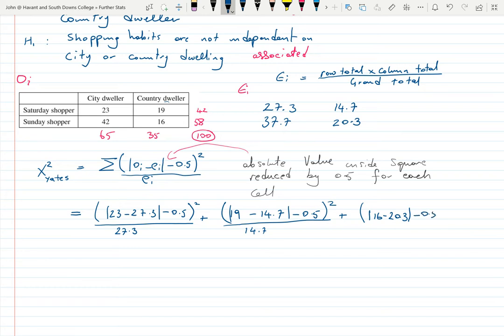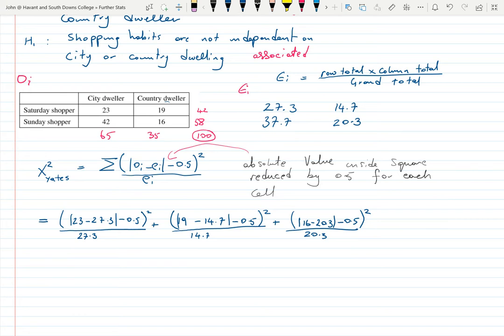Plus 16 take away 20.3 minus 0.5 squared over 20.3, plus 42 minus 37.7 take away 0.5 squared over 37.7.